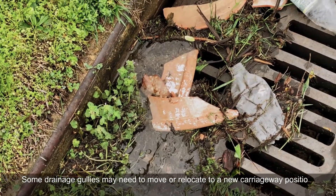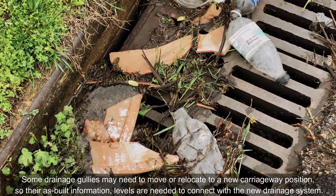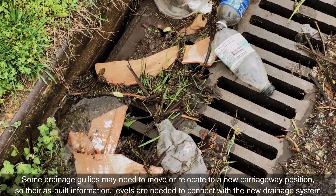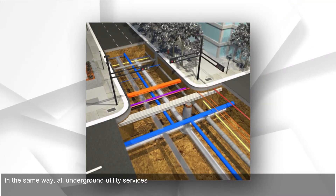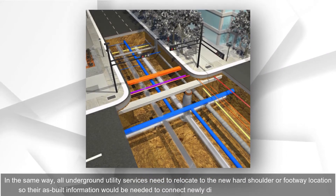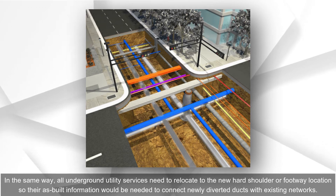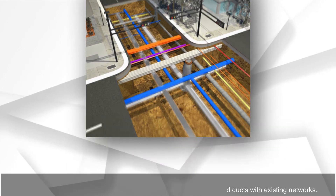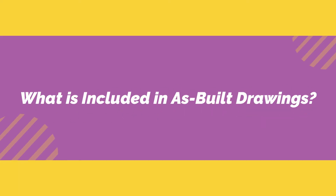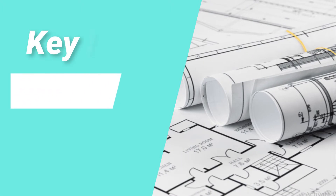Some drainage gullies may need to move or relocate to a new carriageway position, so their as-built information and levels are needed to connect with the new drainage system. In the same way, all underground utility services need to relocate to the new hard shoulder or footway location, so their as-built information would be needed to connect newly diverted ducts with existing networks.